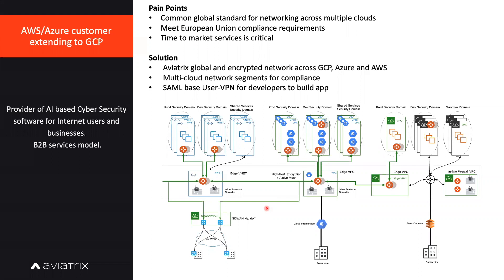Time to market was also very important. If there's a DDoS attack or something happens to their code, they need to quickly develop and push it to their service providers. We solved all these pain points with our global transit solution, which is encrypted by default and works across multiple clouds and on-prem resources. We address compliance with multi-cloud network segmentation, and for developers to quickly log in and push code, we have a strong SAML-based user VPN solution.